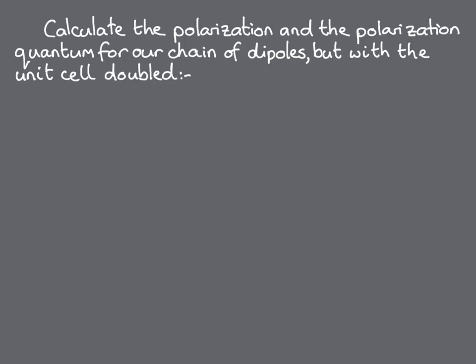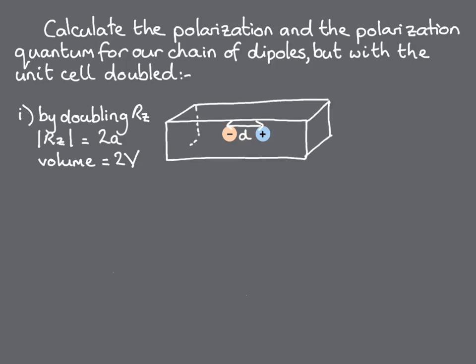Now we have to recalculate the polarisation and polarisation quantum for the same size and orientation of dipoles, but with unit cells of twice the volume for two scenarios. First, where the lattice vector R sub Z along the direction of the dipole is doubled. So R sub Z is 2A and the volume is 2V. Our unit cell looks like this.